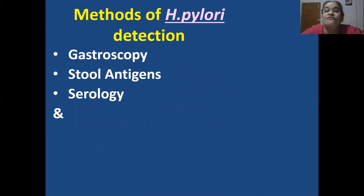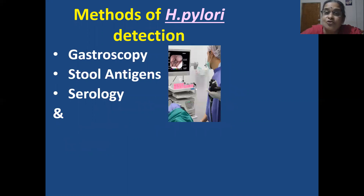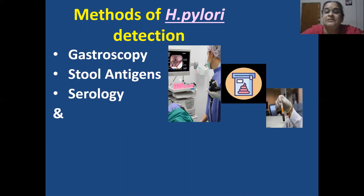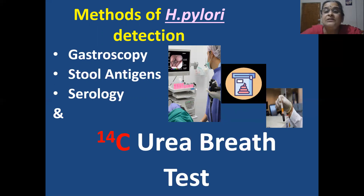Methods of H. pylori detection: gastroscopy can be one of them; stool antigens can be detected; serological samples can be used. But most importantly, the one which we are talking about is the 14 carbon urea breath test.